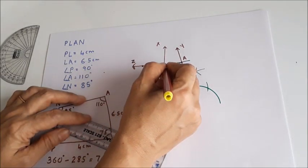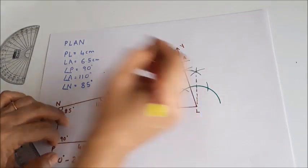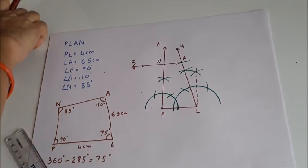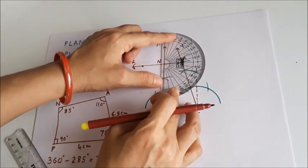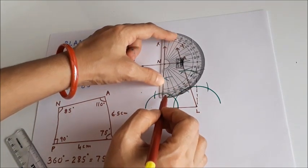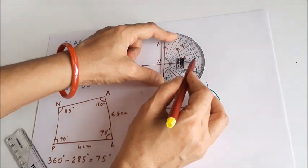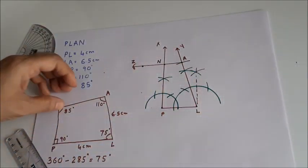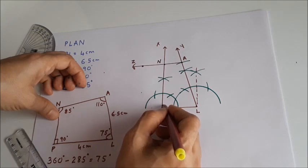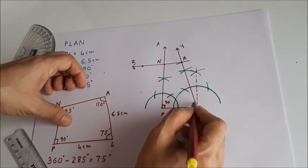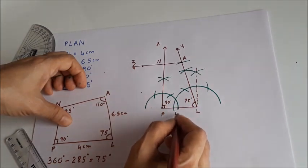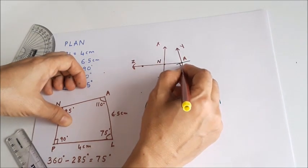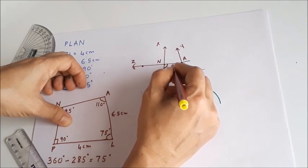This intersection point will be my N. We can check whether angle N is 85 degrees using the protractor. Aligning 0, the line meets exactly at 85 degrees, so our figure is perfectly correct. The measurements are: angle P is 90 degrees, angle L is 75 degrees, PL is 4 centimetres, LA is 6.5 centimetres, angle A is 110 degrees, and angle N is 85 degrees.